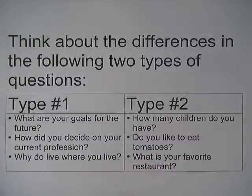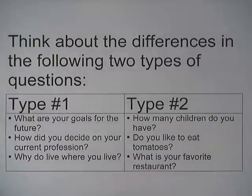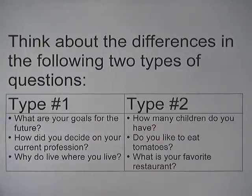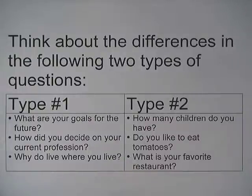Type 1: What are your goals for the future? How did you decide on your current profession? Why do you live where you live? Now Type 2: How many children do you have? Do you like to eat tomatoes? What is your favorite restaurant?